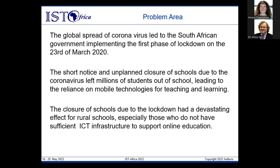Not all rural schools had access to ICT infrastructure for teaching and learning, and not all learners had access to Internet at home, which would enable the interface between teacher and learner. The short notice and unplanned closure of schools due to the coronavirus left millions of students out of school, creating a very big challenge for kids in rural schools. The devastating effect was felt by those from resource-constrained environments, as they could not keep up with learning compared to their urban counterparts.